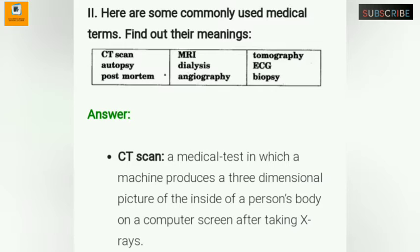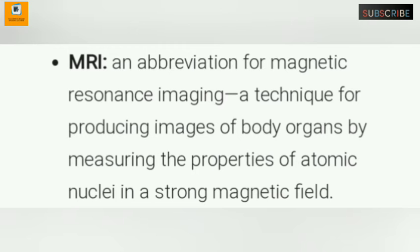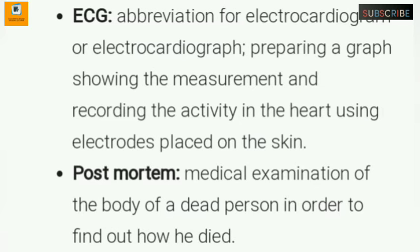MRI — an abbreviation for Magnetic Resonance Imaging, a technique for producing images of body organs by measuring the properties of atomic nuclei in a strong magnetic field. ECG — abbreviation for electrocardiograph, a graph showing the measurement and recording of the activity in the heart using electrodes placed on the skin.